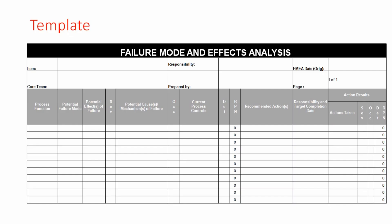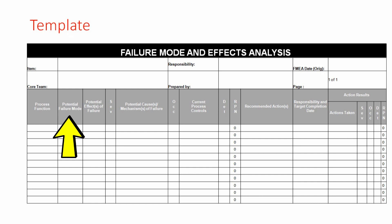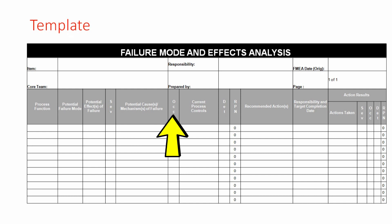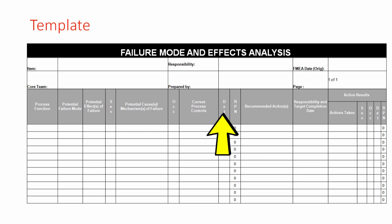This template can be used to create an FMEA. The template has fields for item, core team, responsibility, prepared by, FMEA date, and page number. The first step is to fill in the process function — which process you are performing the FMEA on. Next, fill in the potential failure mode and the potential effect of the failure. Then, using the rating scale, identify the severity rating. Next, write the potential cause of the failure and give an occurrence rating. Then write the current process controls and give a detection rating.